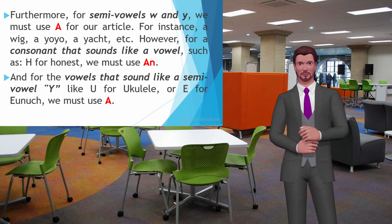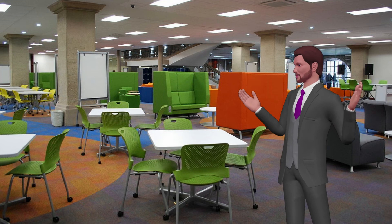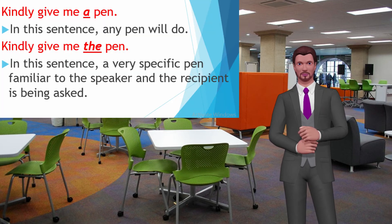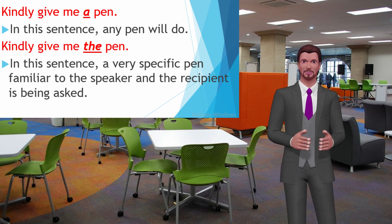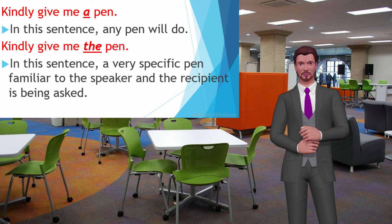Let us look at both types of articles and their respective meanings. First: 'Kindly give me a pen.' In this sentence, any pen will do. Second: 'Kindly give me the pen.' In this sentence, a very specific pen, familiar to both the speaker and the recipient, is being asked for.